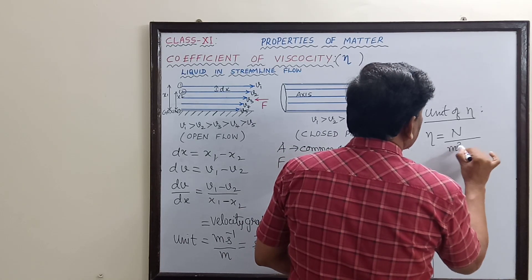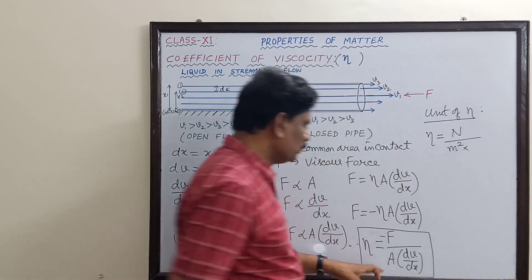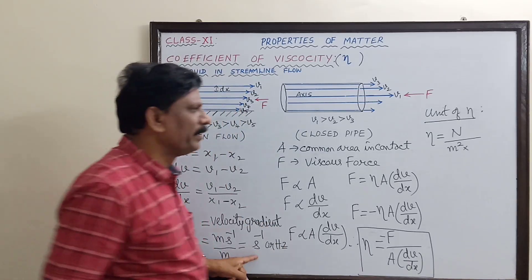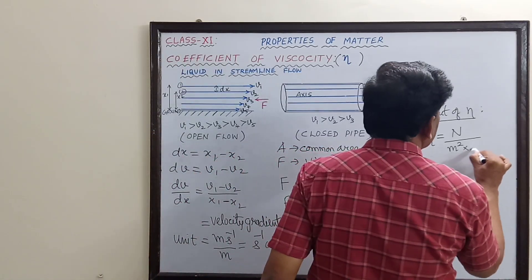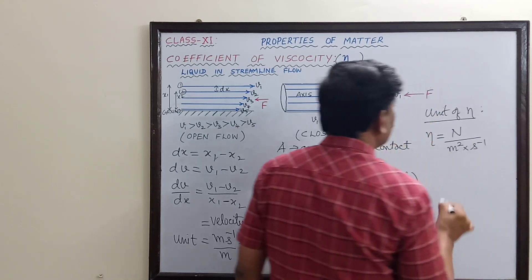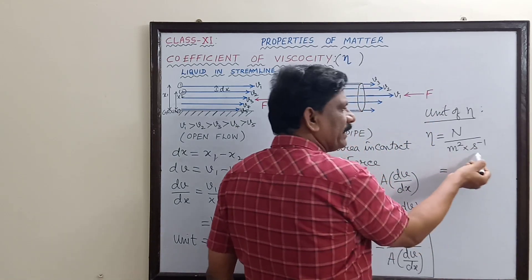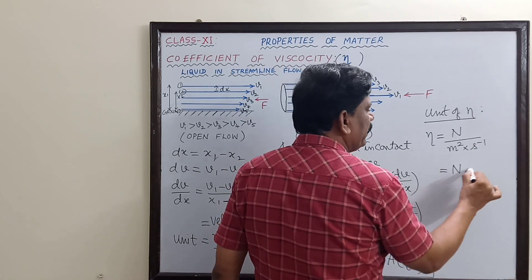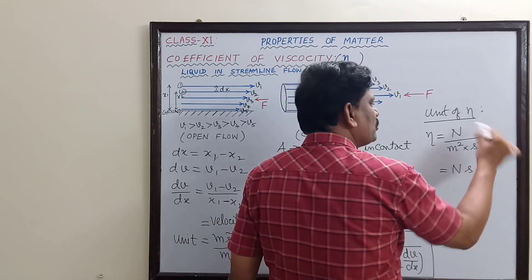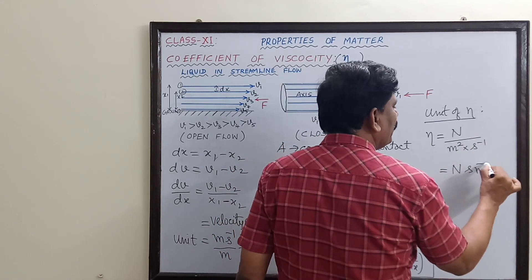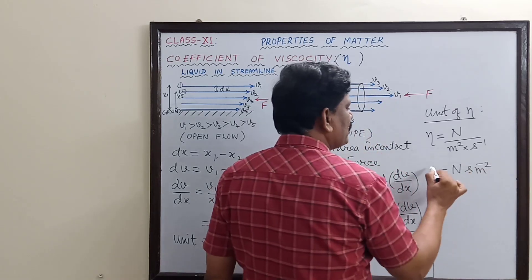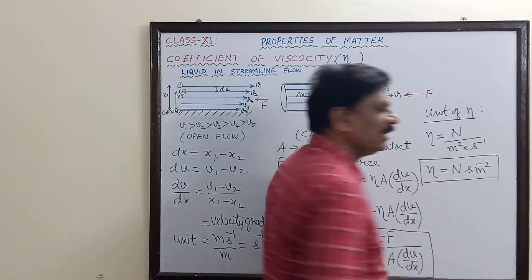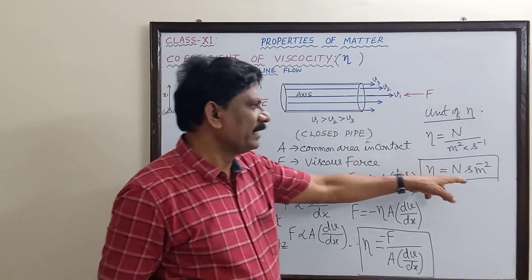and dv/dx has units of s⁻¹. So we have newton divided by (meter squared × s⁻¹). The s⁻¹ shifts up to give newton·second, and meter squared shifts up to give per meter squared. So the unit of coefficient of viscosity is newton·second per meter squared.